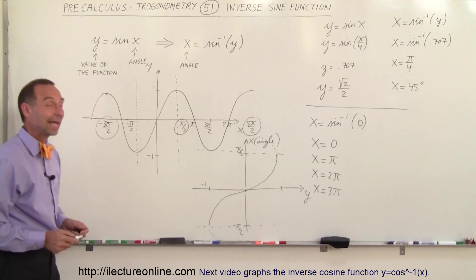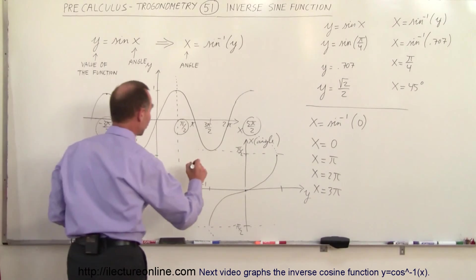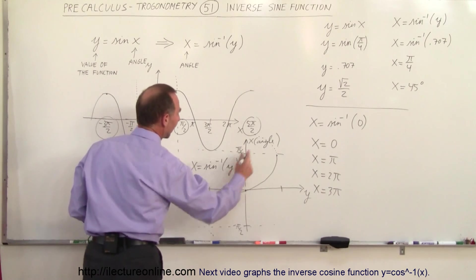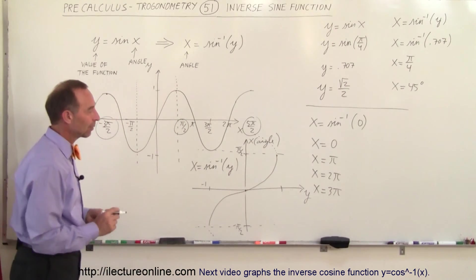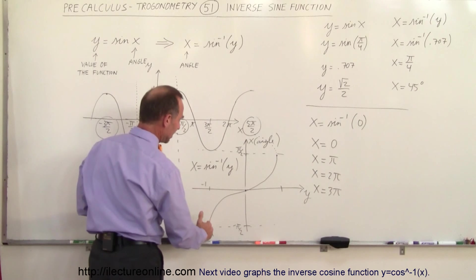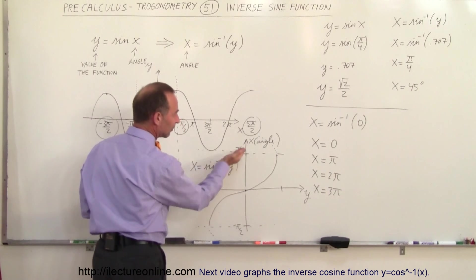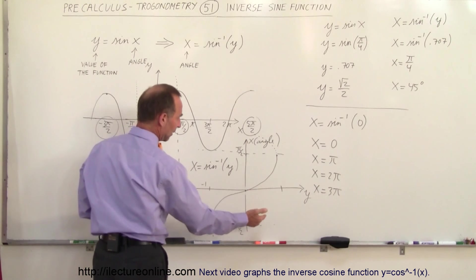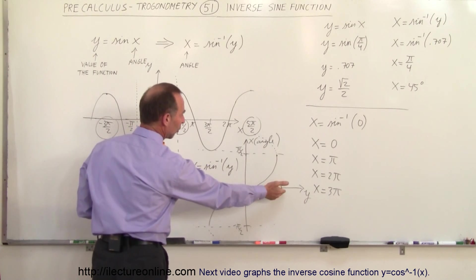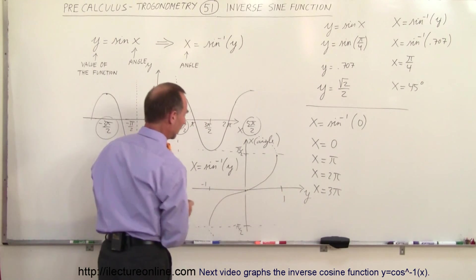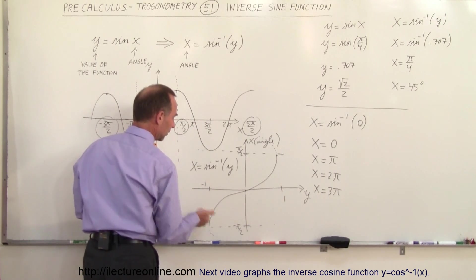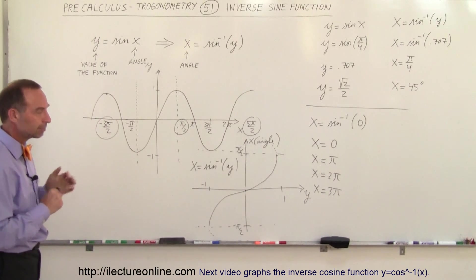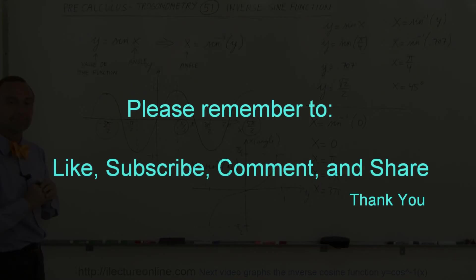That's what we call the inverse of the function. We can say x is equal to the inverse sine of y, and that's how we graph it. You give me any value of the function and I give you the value of the angle. If you give me 0, the angle is 0. If you give me an angle of pi over 2, the value is 1. If you give me minus pi over 2, the value is negative 1, and so forth.